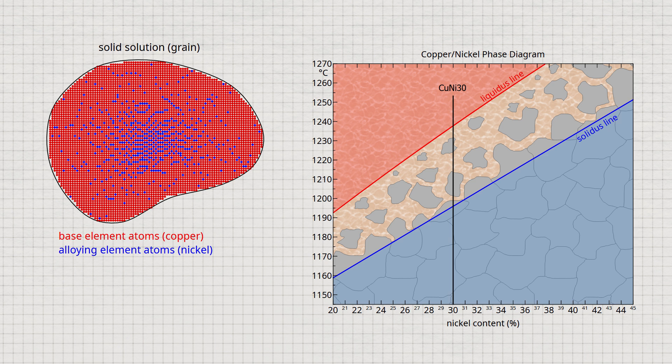Below the solidus line, in the area marked in blue, the microstructure is completely solidified.